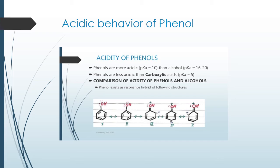Now, another very important topic is the acidic behavior of phenol. Acids are compounds that are proton donors — they give a hydrogen ion. The question is: why does phenol show acidic behavior, and why is phenol more acidic than alcohol? Both contain the hydroxyl group and an oxygen atom with two unshared pairs of electrons.